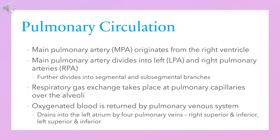The main pulmonary artery originates from the right ventricle. It divides into the left pulmonary artery and right pulmonary artery, which in turn further subdivide into segmental and subsegmental branches.